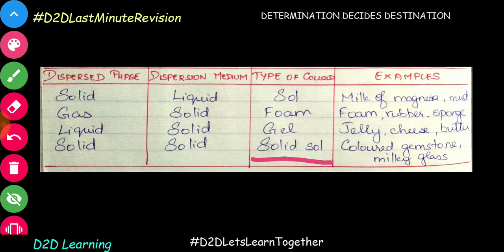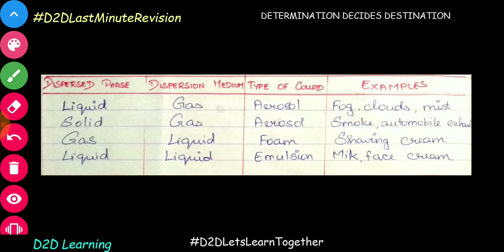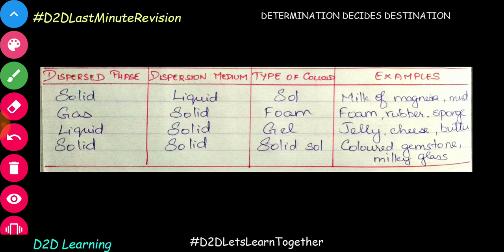For solid in solid: colored gemstones and milk glasses are examples. Let's summarize: gas as medium — liquid is aerosol, solid is aerosol. Liquid as medium — gas is foam, liquid is emulsion, solid is sol. Solid as medium — gas is foam, liquid is gel, solid in solid is a solid sol.